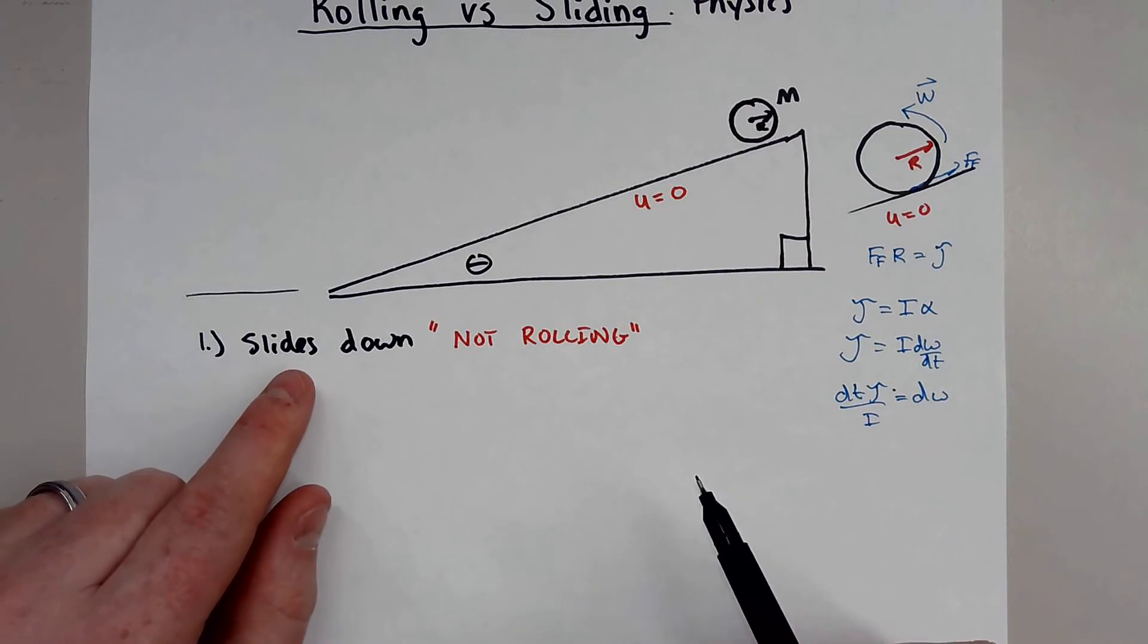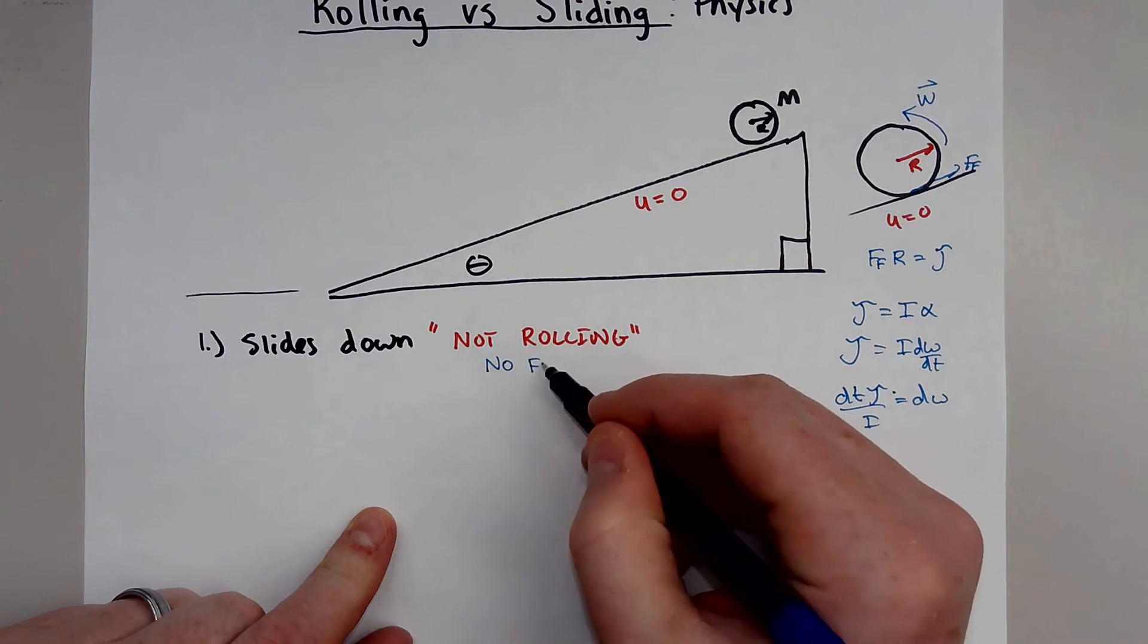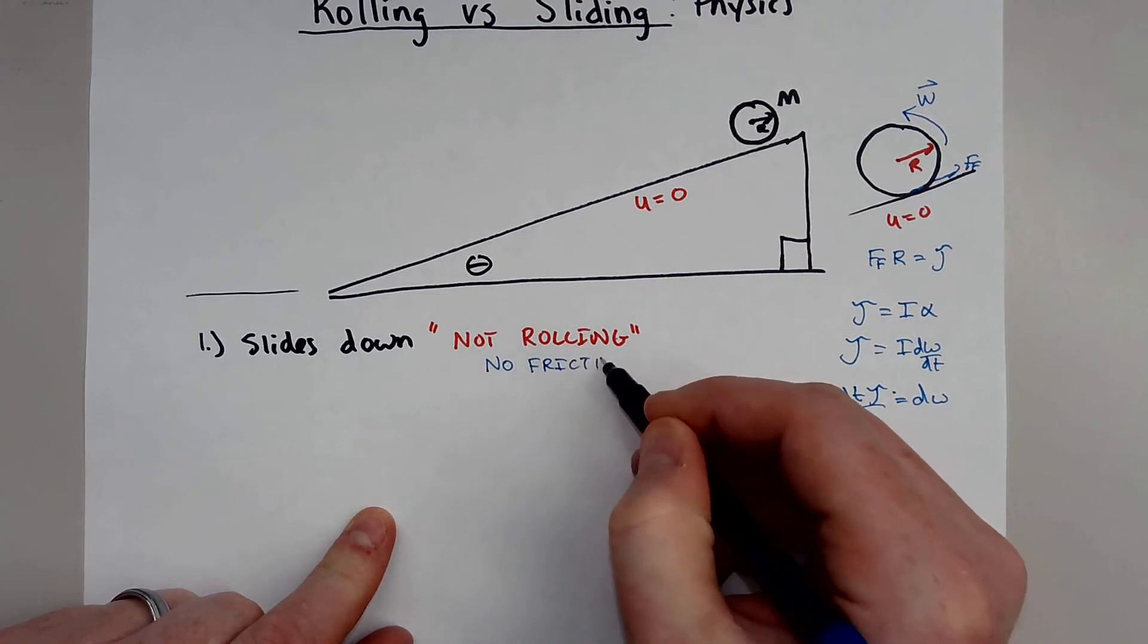So if the object is just sliding, that means it's not rolling, that means there is no friction.